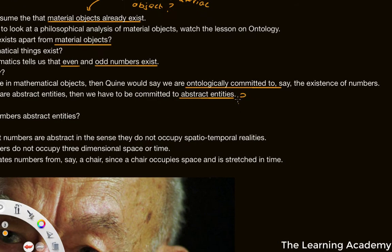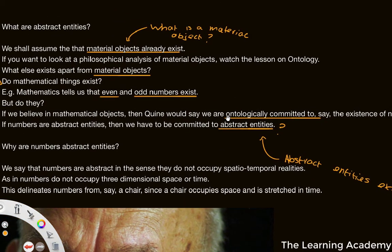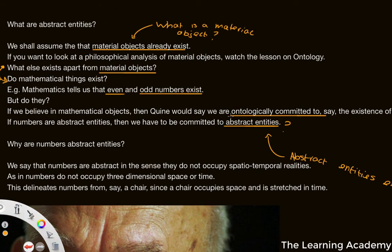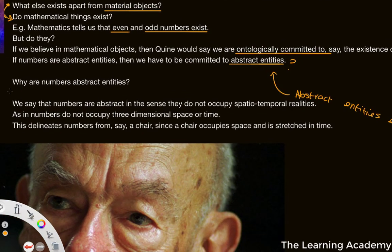If numbers are abstract entities, then we have to be committed to some kind of abstract entity. Can we effectively say that abstract entities exist? If we're ontologically committed to mathematical objects, they are what we would call abstract. And so if we're committed to them, then we have to be committed to at least some kind of abstract entity, and therefore we would say that we can be ontologically committed to abstract entities.